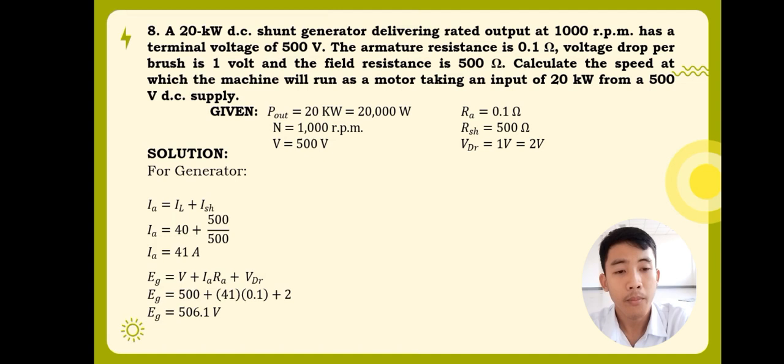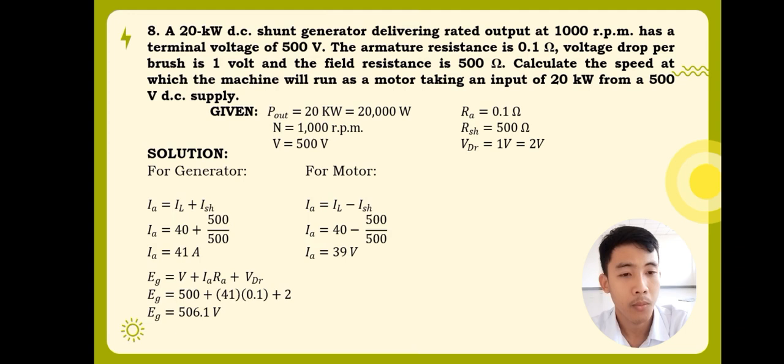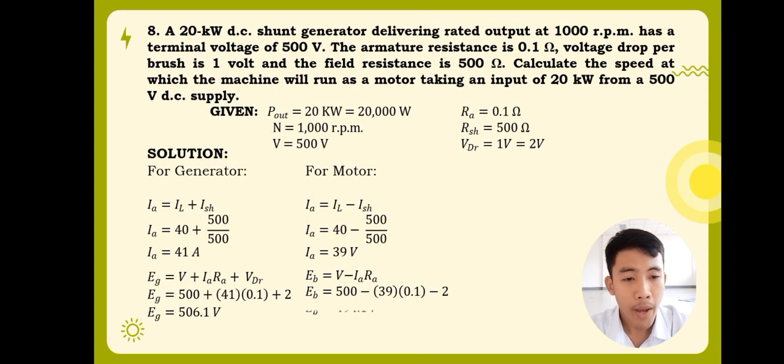Then, we will now solve for the back EMF of the motor. For motor, just like in the previous step, we will first find the armature current, but this time, since it's a motor, the formula would be the load current minus the shunt field current. Substituting the values, 40 minus 500 over 500, that means the armature current for motor is 39 amperes. Then, proceeding to the formula, back EMF is equal to V minus Ia times Ra minus Vdr or the voltage drop. Substituting the values, we will have the back EMF is equal to 500 minus 39 times 0.1 minus 2, which is the voltage drop. Then, input it in a calculator, it will yield back EMF is equal to 494.1 volts.